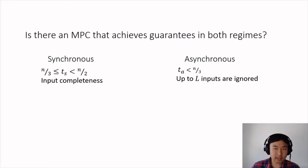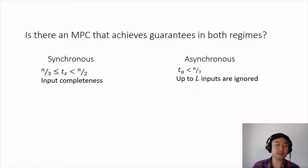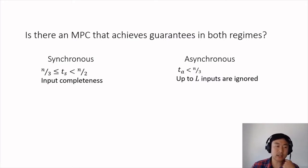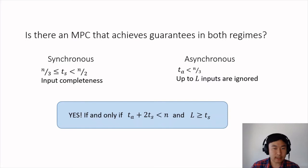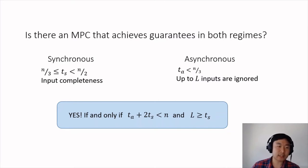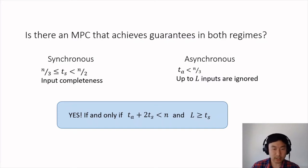More concretely, we would like to have input completeness and tolerate up to TS corruptions when the network is synchronous, and even when the network is asynchronous, tolerate TA corruptions — of course allowing some of the inputs to be ignored. We answer the question by showing that such a protocol exists if and only if TA + 2·TS < n, and the number of ignored inputs is at least TS. That is, we cannot guarantee to ignore fewer than TS inputs when the network is asynchronous.